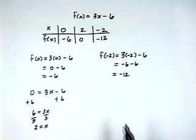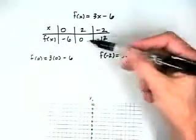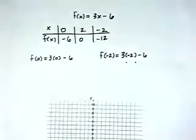I'm ready to plot these ordered pairs in a coordinate system. Making note of them again, they are 0, negative 6, 2, 0, and negative 2, negative 12.